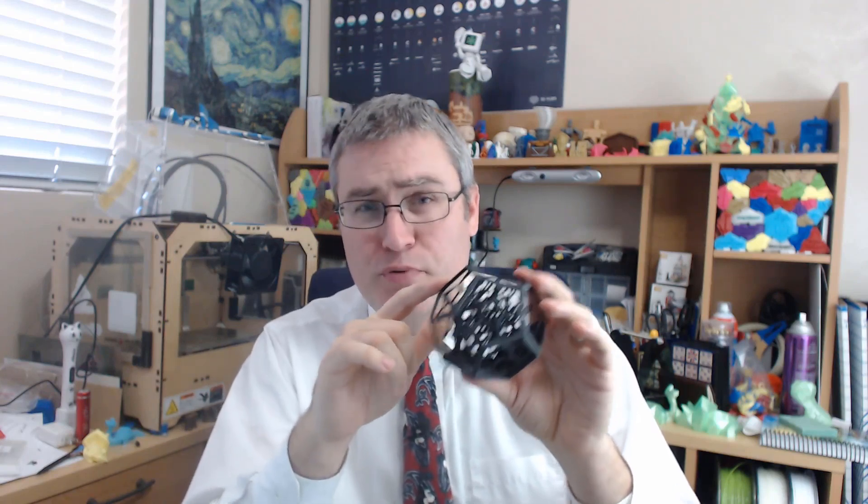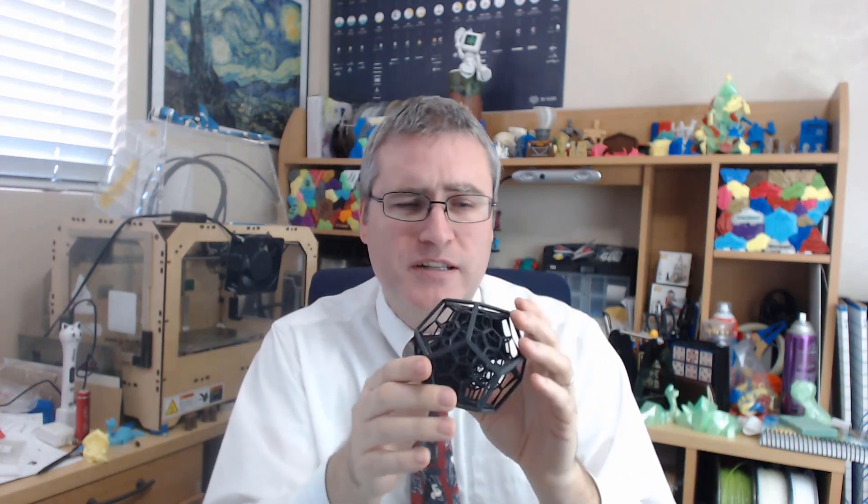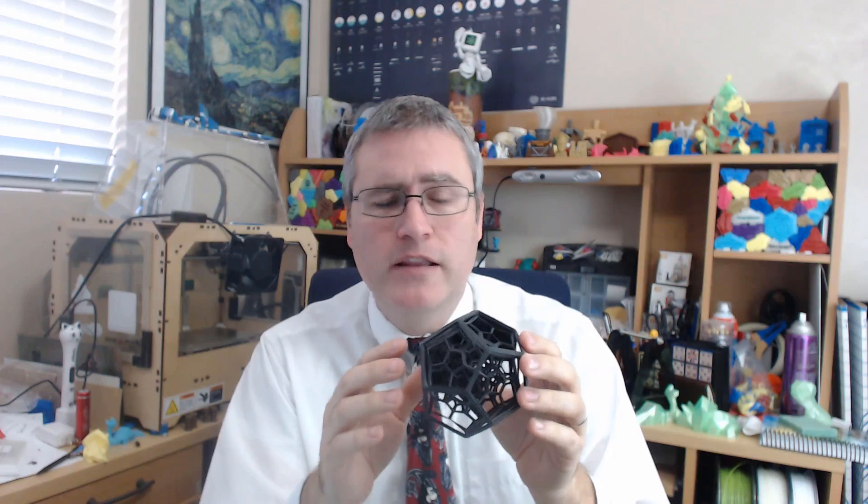Now looking at these prints, the layer lines are still pretty obvious on these prints. While they are very fine layer lines, they are layer lines nonetheless, and you can see how this printed and what orientation.